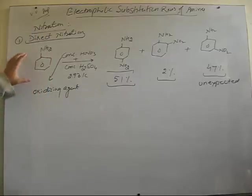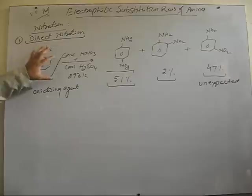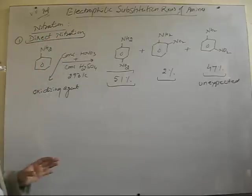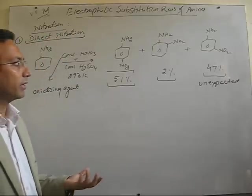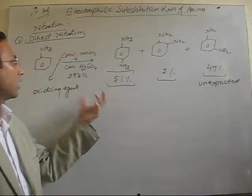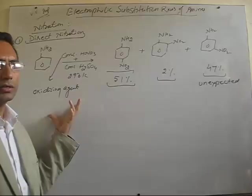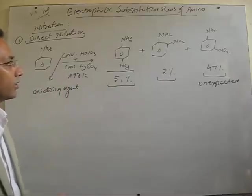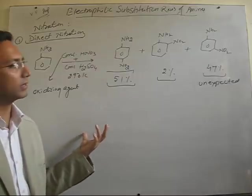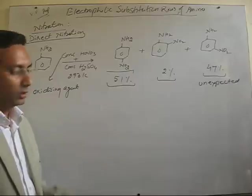Now, though nitration, as nitric acid is an oxidizing agent also, along with the nitrating agent, along with the nitrating products, we also get so many oxidation products here. So, the direct nitration of aniline is not very much preferred to get the nitration products.